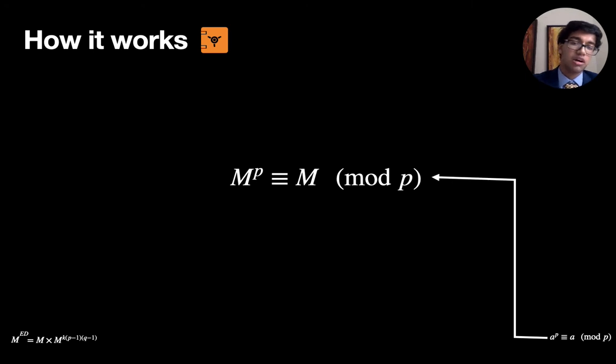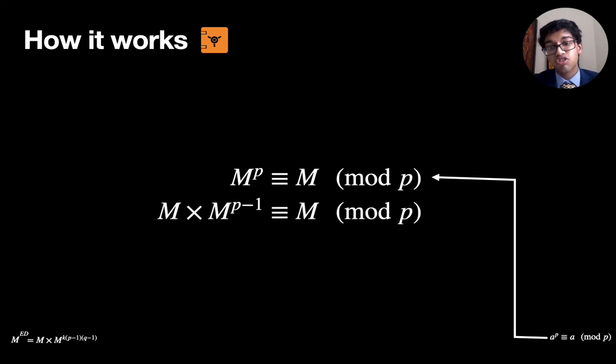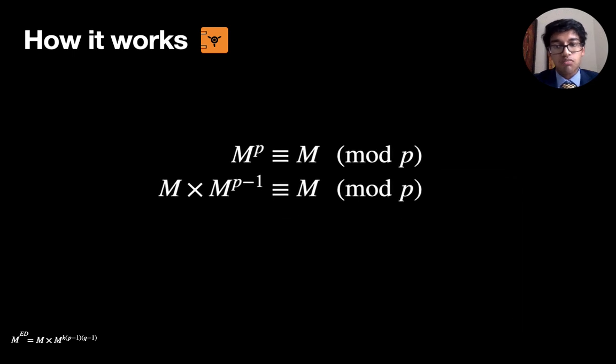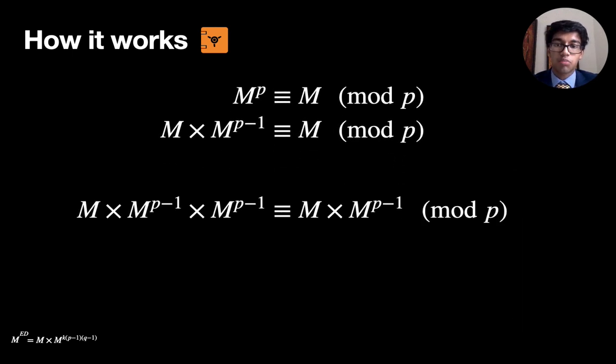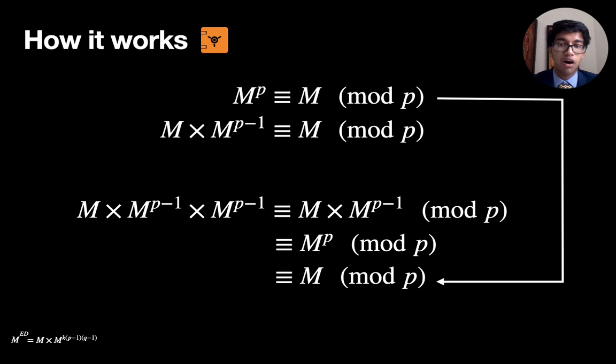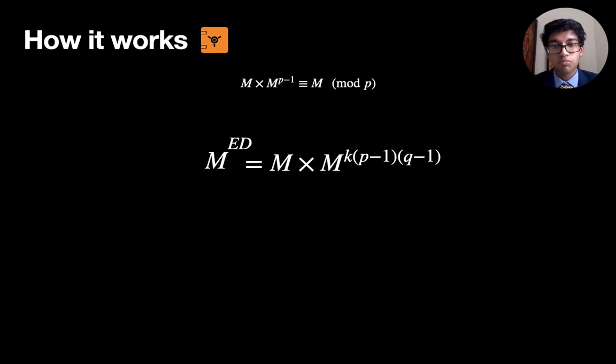Now thinking back to Fermat's little theorem, if we have a message to the power of a prime number, that gives us our original message after division by that prime number. Note that we can change the left hand side to be m times m to the p minus one. If we were then to multiply both left and right hand side by m to the p minus one, the right hand side becomes m to the p. But we already know this has a remainder of m after division by p. They're equivalent. They're in the same equivalence group. Now you might notice here that we can just keep repeatedly multiplying by m to the p minus one. And we'd always get a remainder of m after division by p. So in our example of m to the ED, we're just multiplying by m to the p minus one a certain number of times. And so that just gives us a remainder of m after division by p.